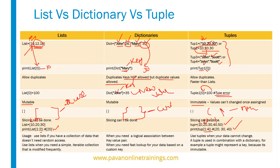When to use these types: use a list if you have a collection of data that doesn't need random access, or when you need a simple, relatable collection that is modified frequently. Use a dictionary when you need a logical association between a key and a value pair — if you have multiple keys with their values, go for dictionary. Also use dictionary when you need a fast lookup for your data based on a custom key.